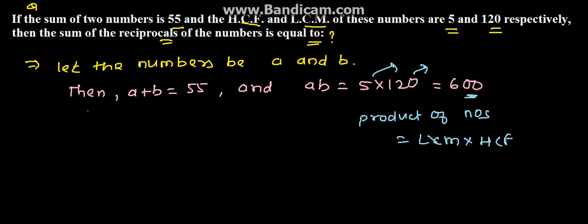Now for the required sum, we need to find the reciprocals of the numbers. The sum of reciprocals will be 1 upon A plus 1 upon B, which equals the sum of the numbers upon the product of the numbers.